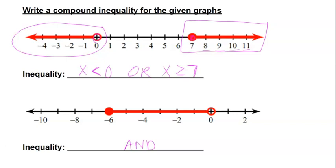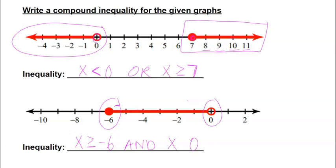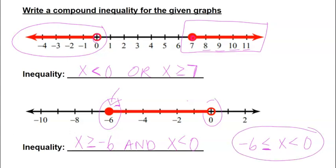The next graph is an AND compound inequality. The left circle is at negative 6, shading right toward larger numbers — closed circle, so x ≥ −6. The right circle is at 0, shading left toward smaller numbers — open circle, so x < 0. We can also write this in between format: −6 ≤ x < 0, with the smaller number on the left and less-than symbols throughout.